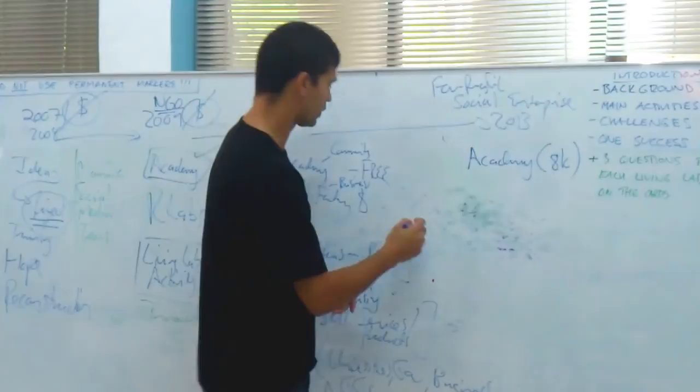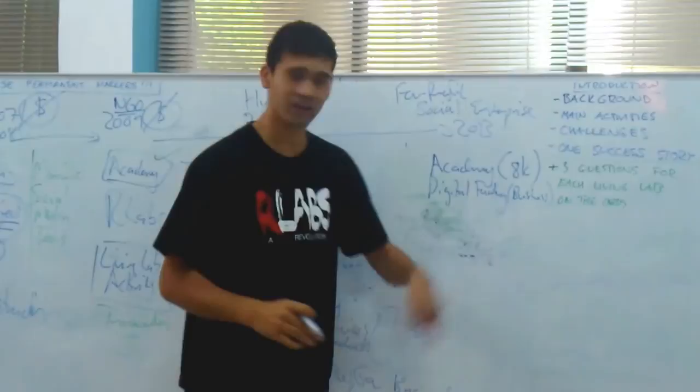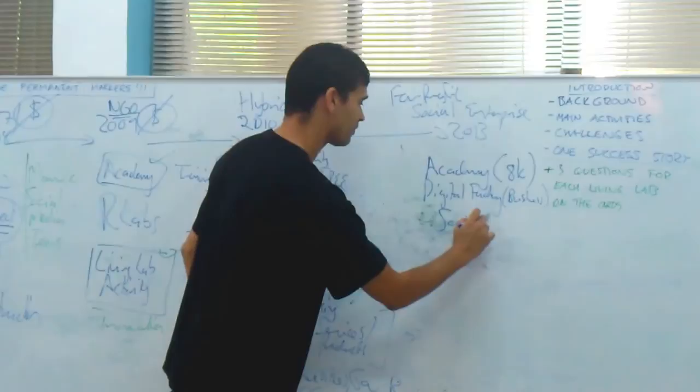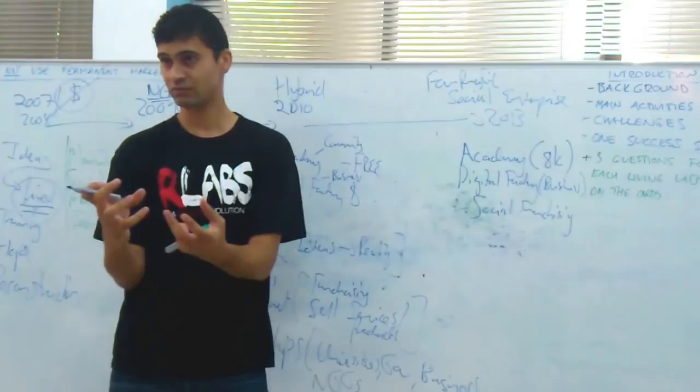Of course, what has also happened with RLab now, we still have digital factory, which is a business, right. And to give you an idea, that digital factory has generated a lot of income for us in the last two, three years. We also run, I'm just giving you a quick overview, we also do what we call social franchising. And of course, many of you are part of that process, where we try and take all that we've learned, and we actually replicate the model.